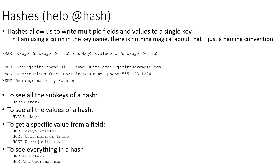This is similar to MongoDB where we have an attribute of data type object, allowing us to write a JSON object with multiple values into a single attribute. With a hash, we have a key and within that key we can have any number of sub-keys or fields with their own values. For example, we'd have a hash key for each user with fields like first name, last name, email, and phone.